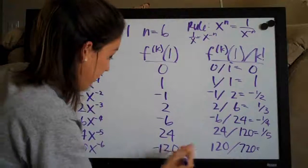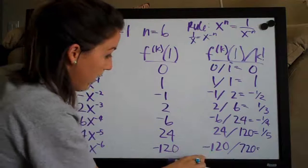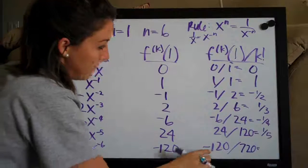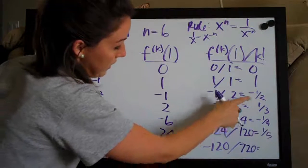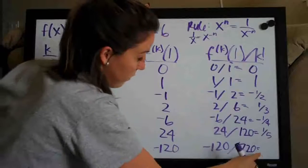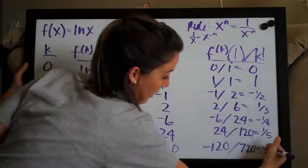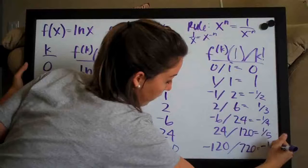Sorry this was negative one-twenty here and I recognize that I had made a mistake because you can see the pattern is alternating: negative, positive, negative, positive. So I expected this to be a negative and it is, it's negative one-sixth.